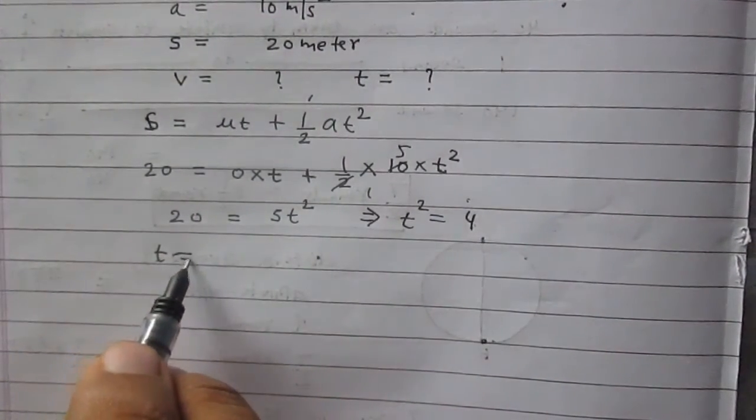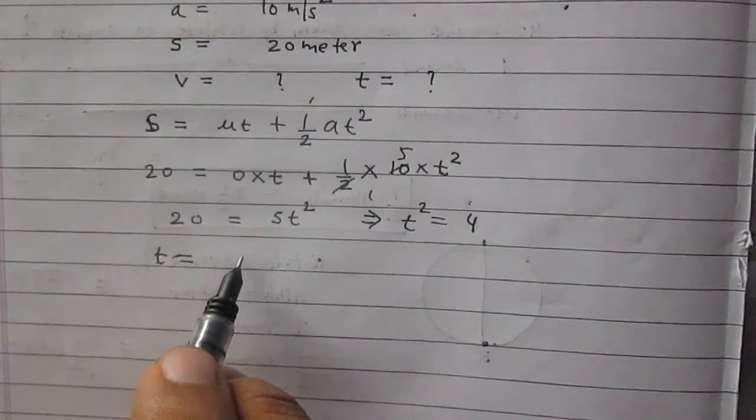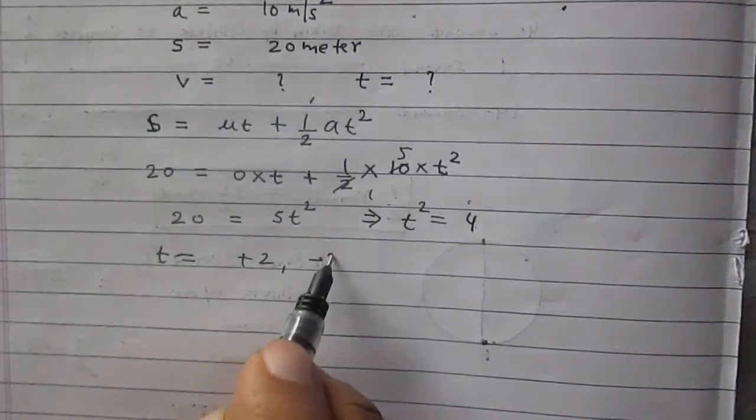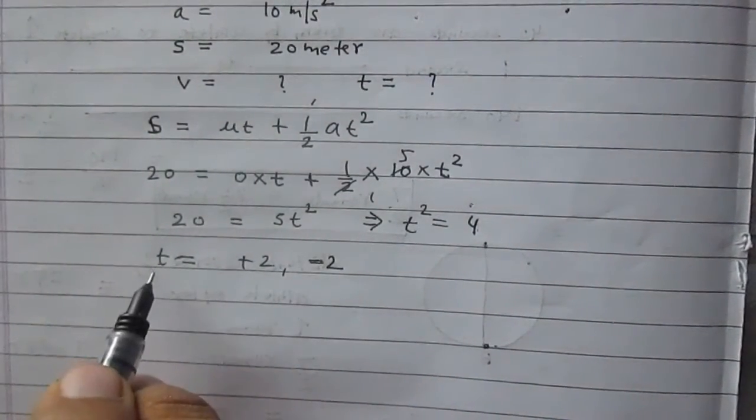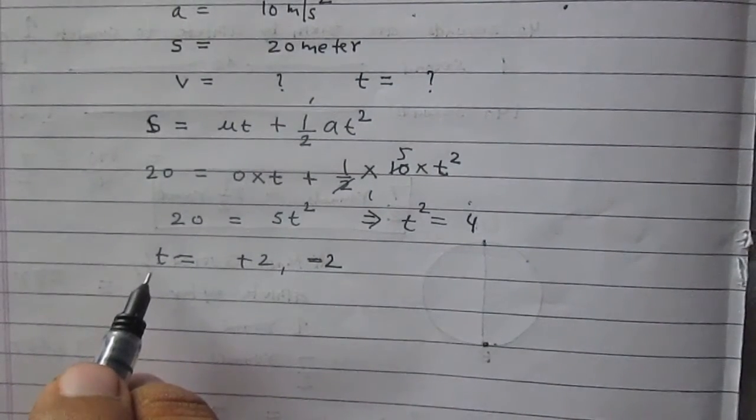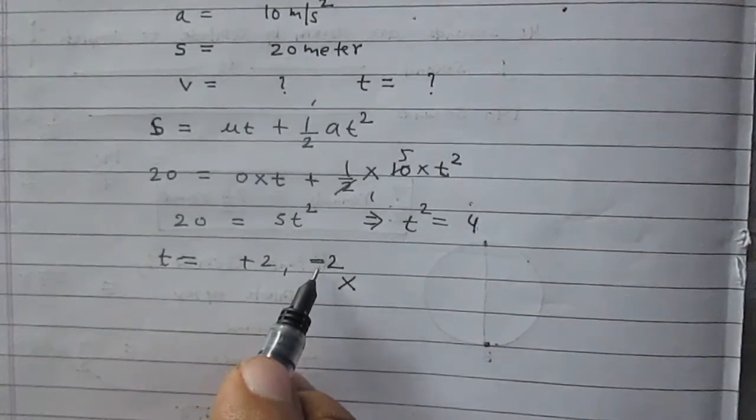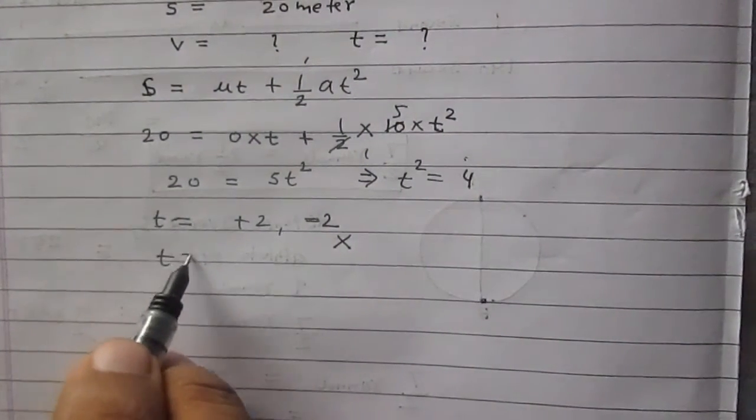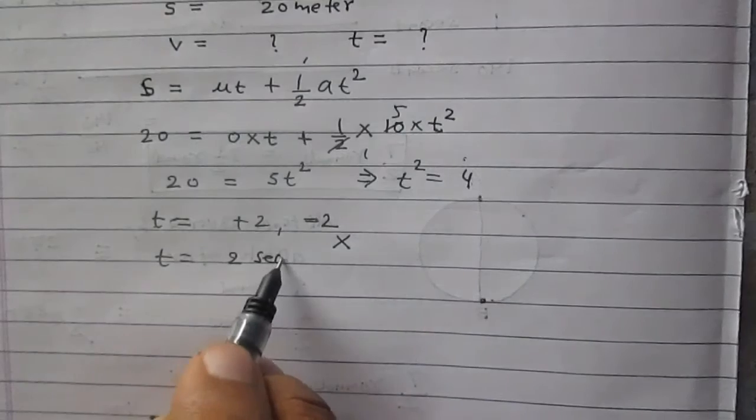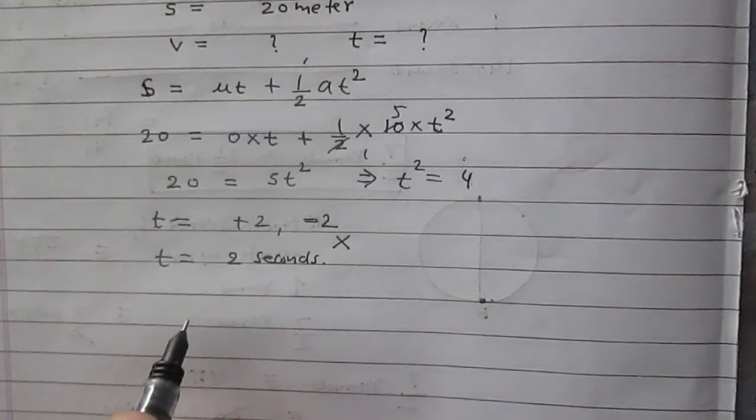Mathematically, we can find values of t are plus 2 and minus 2. But t here represents the quantity time, and time cannot be negative. So t equals minus 2 is not possible. Therefore, the value of t is 2 seconds.